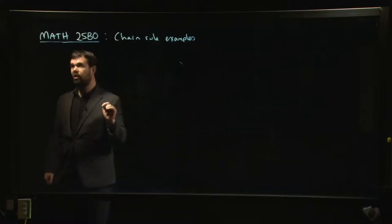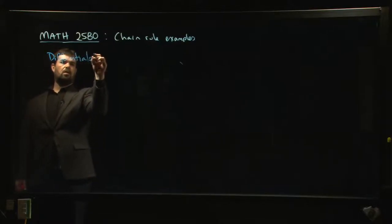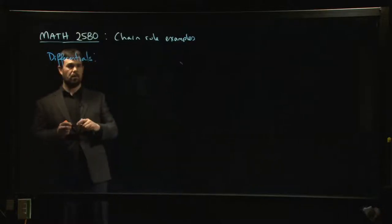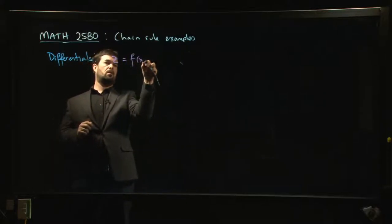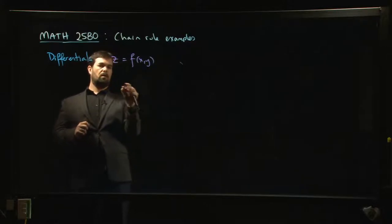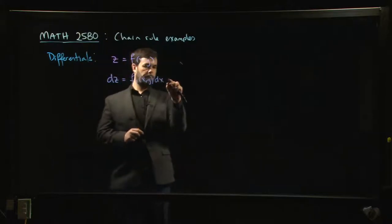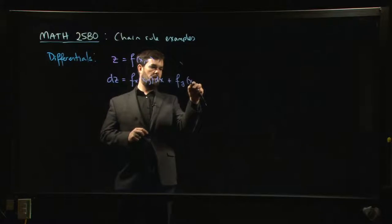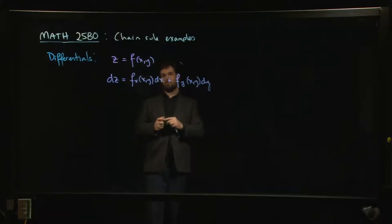One of the ways that I think might be helpful to think about chain rule and how things fit together is to remember we have these differentials. So let's say you have z equals f of x,y. Well, then we know that dz should be the x-derivative times dx plus the y-derivative times dy.